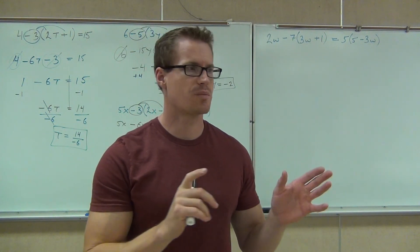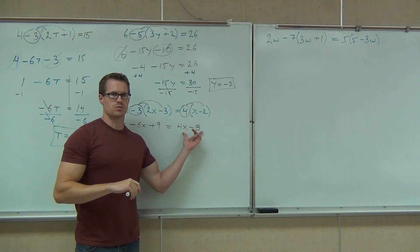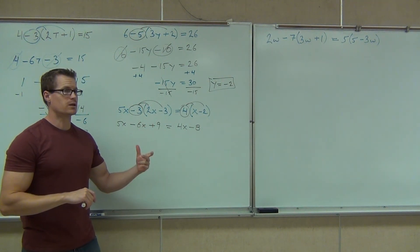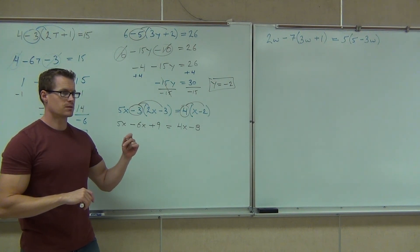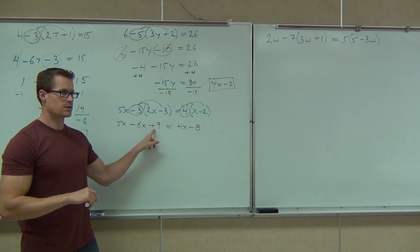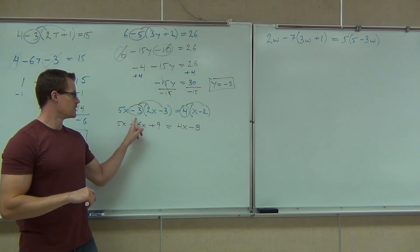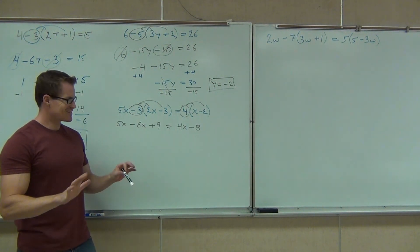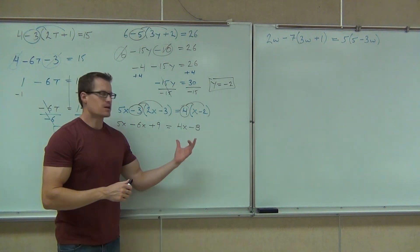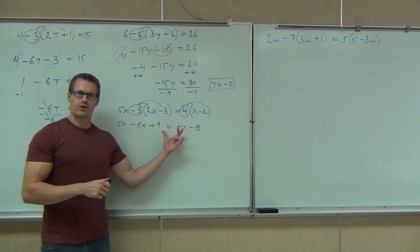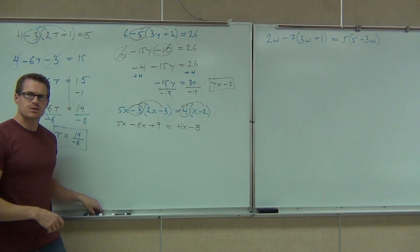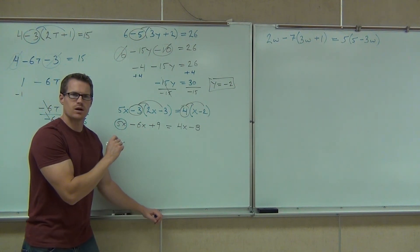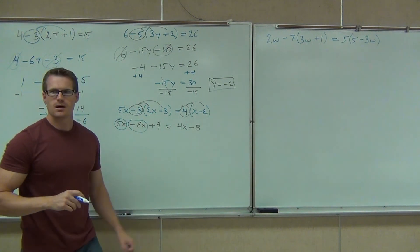The next step is to combine like terms — we've already distributed. Over here on the left side, I have no like terms to combine. Over here on the right side, we do have some like terms to combine. Can you tell me what like terms I'm looking at combining? 5x and — 5x and what? Negative 6. Okay, if you combine those — you can combine those 5x and negative 6 terms.